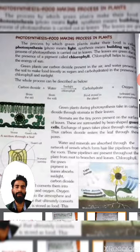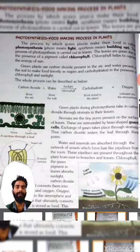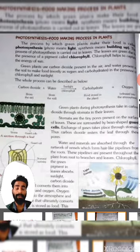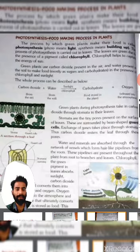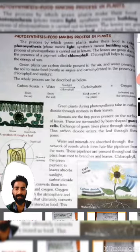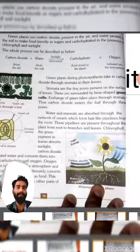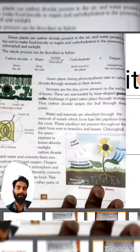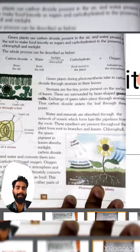During photosynthesis, green plants take in carbon dioxide through stomata in their leaves. Stomata are tiny pores present on the surface of leaves, surrounded by bean-shaped guard cells. Exchange of gases takes place through stomata, so carbon dioxide enters the leaves through these pores. Water and minerals are absorbed through a network of vessels that form hair-like pipelines from the roots throughout the plant to the branches and leaves.